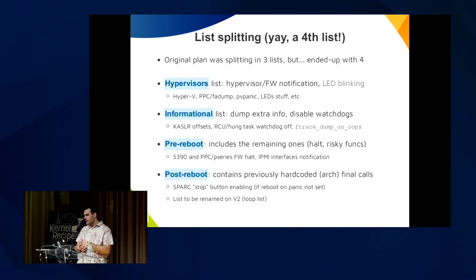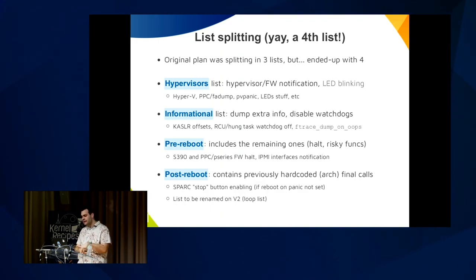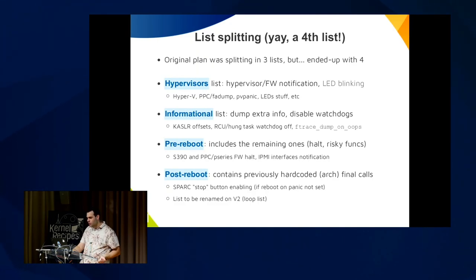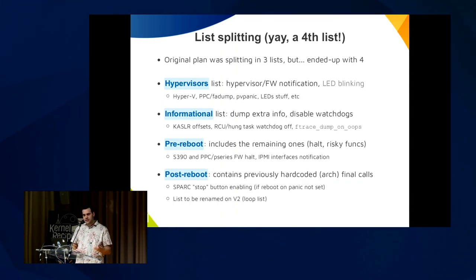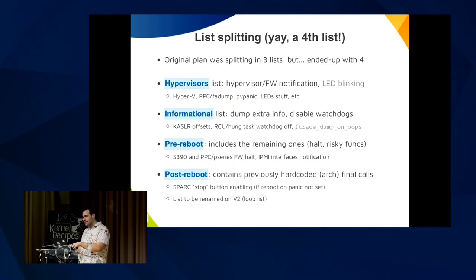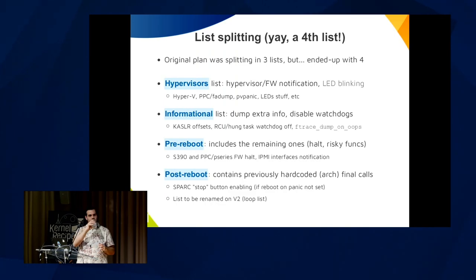After fixing notifiers — originally planned for three releases but ended up as four — we have four lists. The first is the hypervisors list, with functions that poke the hypervisor and firmware, like pv_panic. HyperV has a very interesting case — I'll talk more about that. Firmware-assisted dumping for PCI is also here. Then we have the informational list that dumps information and disables watchdogs — like RCU, run task watchdog, and ftrace dump on oops. Then the pre-reboot list with halting functions and IPMI interfaces notification.